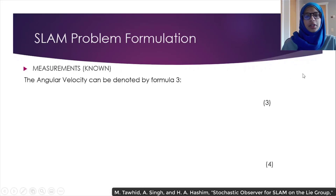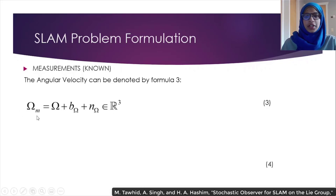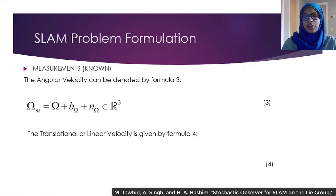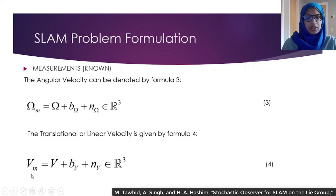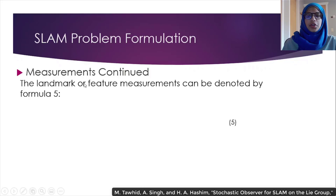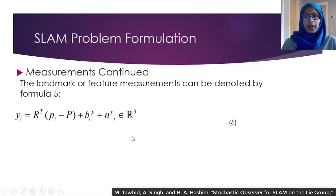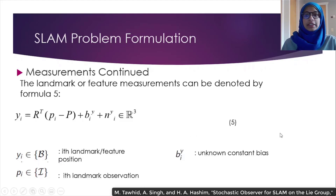Now that we have our unknowns formulated, let's look at formulating the known measurements. The angular velocity can be denoted by Formula 3, where omega m equals omega plus b omega plus n omega. Omega m represents the measured angular velocity, b omega represents any bias attached to the velocity, and n omega is any unknown random noise. Similarly, the translational or linear velocity can be given by Formula 4, where vm equals v plus bv plus nv. Then, for the last known variable — feature or landmark measurements — this can be denoted by Formula 5, where bi represents any bias attached to the measurement, and ni is any noise randomly attached to the measurement.